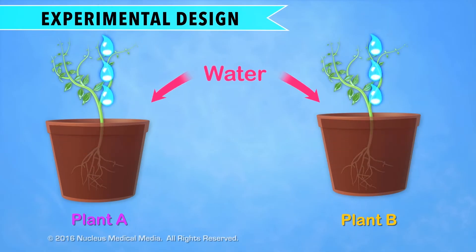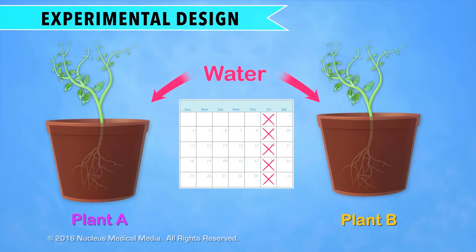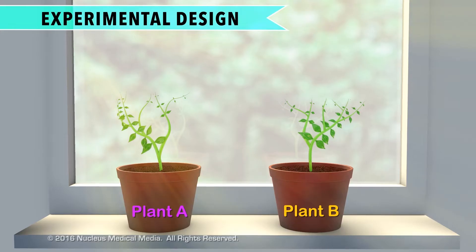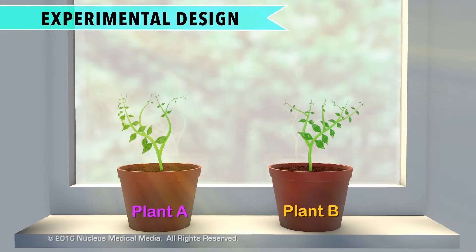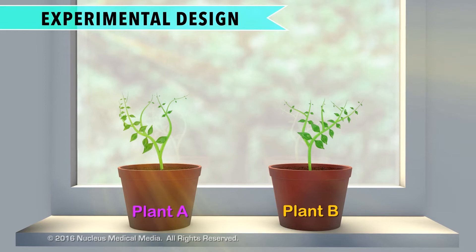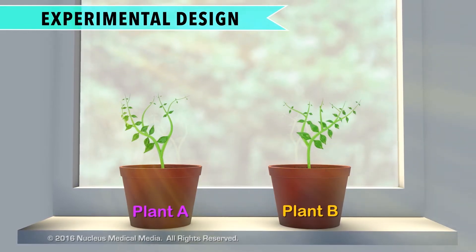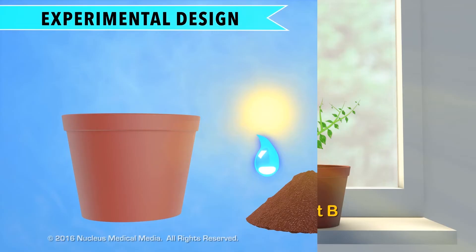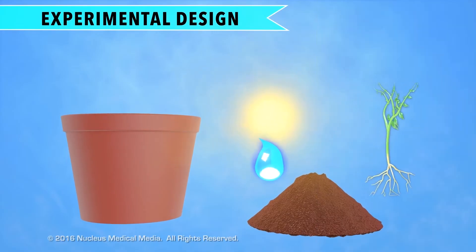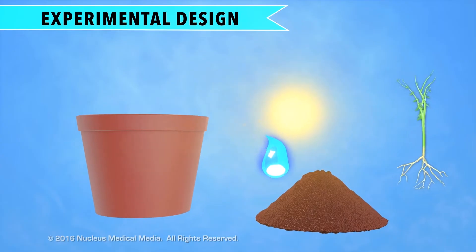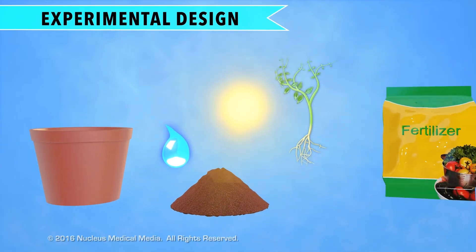You would water them both the same amount at the same times. You would also put the plants next to each other in the same place, such as a windowsill, so that they're both exposed to the same amount of sunlight and kept at the same temperature. It's important that everything is the same, because the purpose of your experiment is to find out whether or not the fertilizer works.